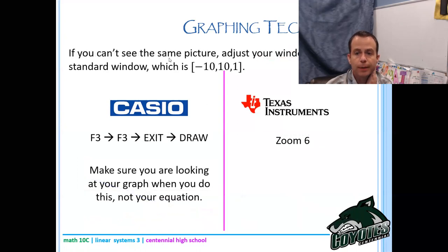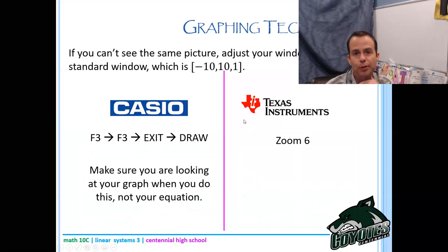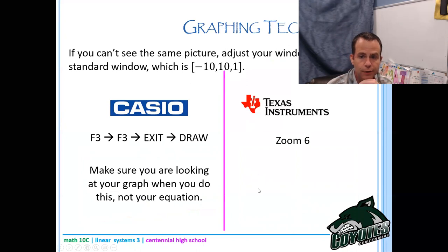So if you can't see the same picture, adjust your window settings to a standard window which is -10, 10, 1. For x and y: on Casio press F3 F3 then Exit and Draw — make sure you're looking at your graph when you do this. For Texas Instruments: Zoom 6.